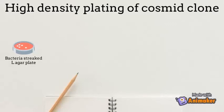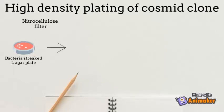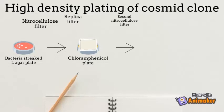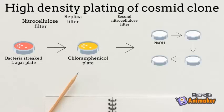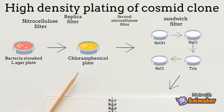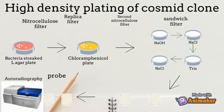Bacteria are spread on L-agar plates containing ampicillin. A dry nitrocellulose filter is layered onto the plate, then removed. The replica filter is placed on a chloramphenicol plate and a second dry filter is placed on top to form a sandwich and incubated overnight at room temperature. The sandwich is removed and washed with NaOH and NaCl for 30 seconds, and 1 minute in Tris and NaCl. The two filters are peeled apart and washed separately with 2× SSC, 0.1% SDS, and then 2× SSC. The filters are screened with probe, removing previous hybridization with NaOH.